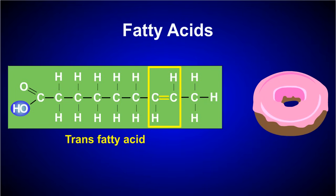A trans fat is an example of an unsaturated fatty acid where the hydrogen atoms are on opposite sides of the double bond. Trans fats are usually formed during the production of processed foods and are also commonly found in partially hydrogenated oils. In order to increase shelf life and melting point, excess hydrogen atoms are introduced to an unsaturated oil, causing the formation of trans fat bonds in the fatty acid chain. Unfortunately, the consumption of trans fats has been associated with cardiovascular disease, and its use has fallen from favor.